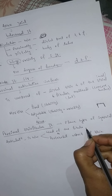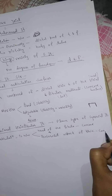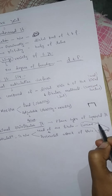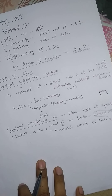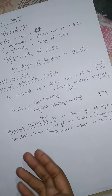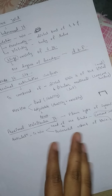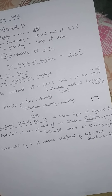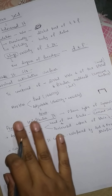In general, the fibula is concave and the tibia is convex, though this varies from person to person. This proximal tibiofibular joint is surrounded by a joint capsule which is reinforced by anterior and posterior tibiofibular ligaments.